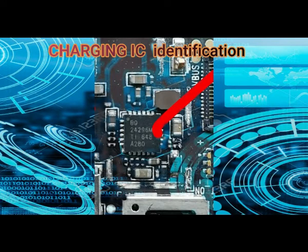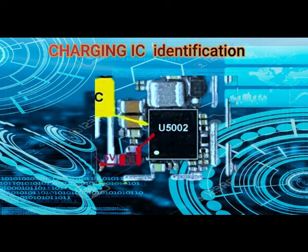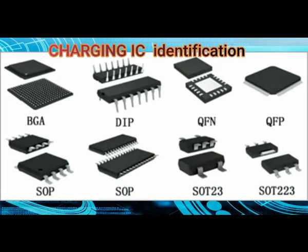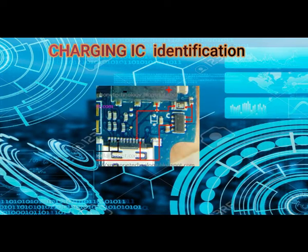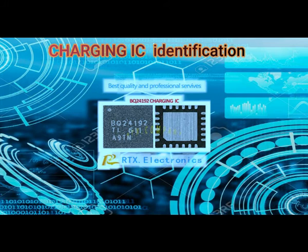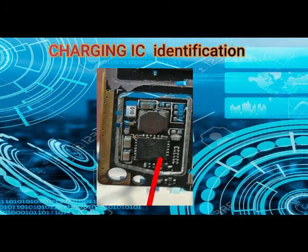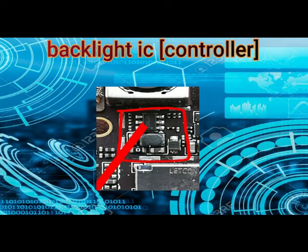Charging IC identification: The Charging IC is found in the power section of a mobile phone. It is similar to the Power IC in most phones. It has one or two big coils around it with few brown capacitors — not as many as that of the Power IC. It can come in BGA, QFN, QFP, or any other SMD package type. Look at those images well and you will be able to identify the Charging IC on any mobile PCB.